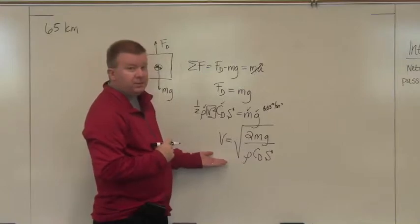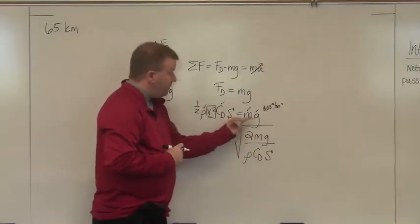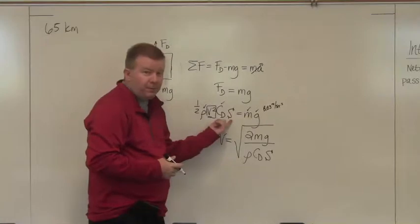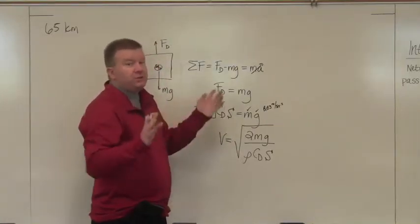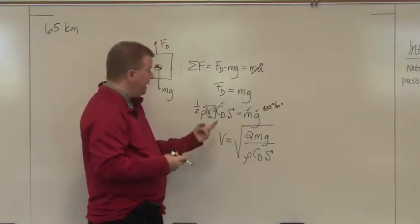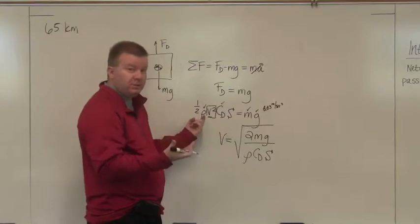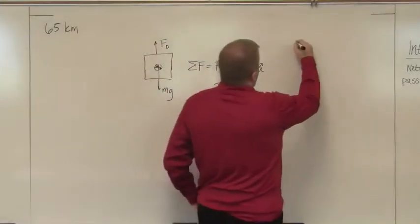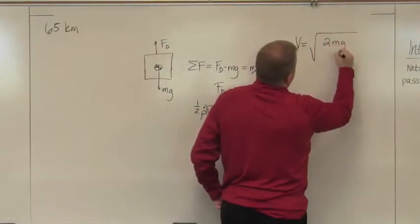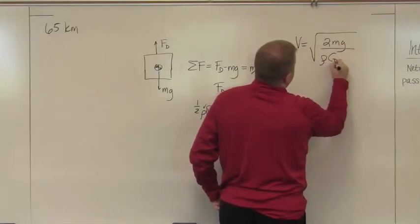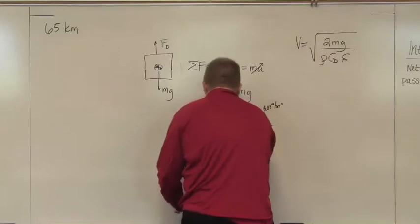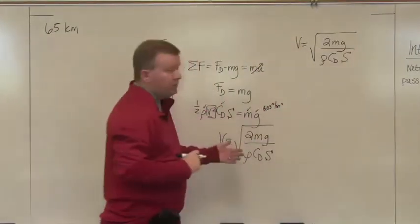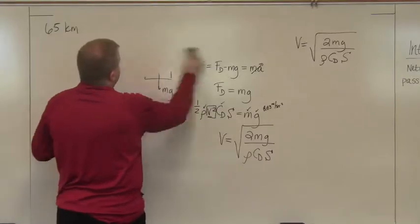We want to know how fast the object is falling because the point of all this is to determine time, because you need to know how long it's going to take to hit the surface or get to a certain point in the atmosphere so you can take your measurements. That's your lifetime. This is the calculation to show you what it is. We can rearrange this thing and basically we get that velocity is the square root of two times the mass times gravity divided by the density times the drag coefficient times the plan form area.